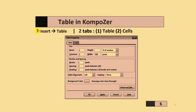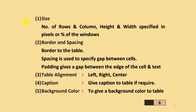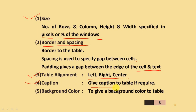To add tables in Composer software, go to Insert and the Table options. There are two tabs: Table and Cells. You can define the size — number of rows, number of columns, height, and width, specified in pixels or as a percentage of the window. You can specify borders and spacing. Spacing specifies the gap between different cells, and padding gives the gap between the edge of the cell and the text. The third option is table alignment — left, center, or right. You can add captions and background color to your table.